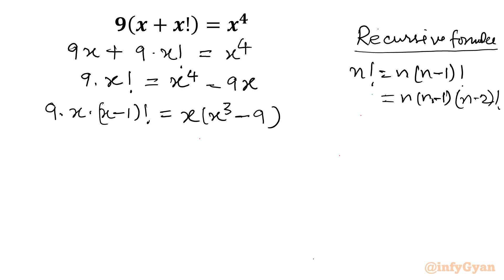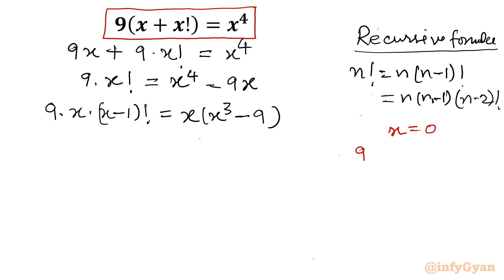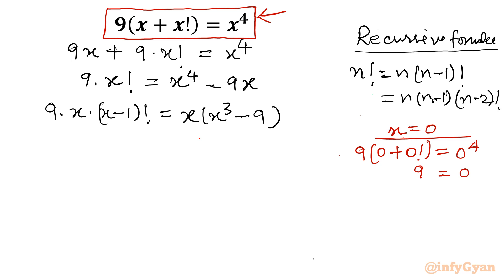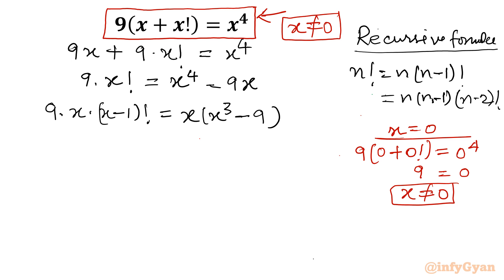But before cancelling, we have to check that x equal to 0 should not be a solution of the original equation. At x equal to 0, the left hand side becomes 0 plus 0 factorial, which is 0 plus 1 equals 9, but the right hand side is 0 to the power 4, which is 0. Since 9 does not equal 0, x equal to 0 is not a solution, so we can divide both sides by x.